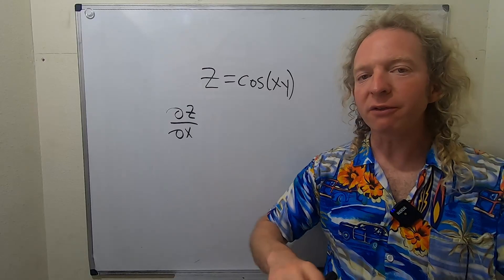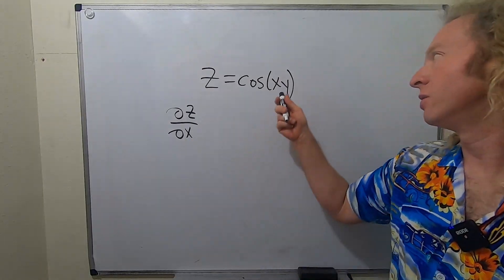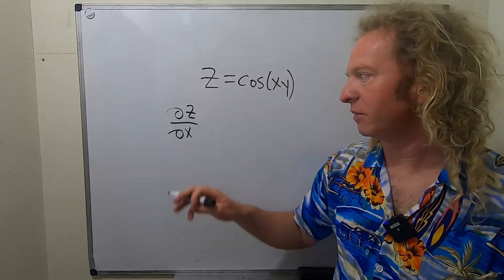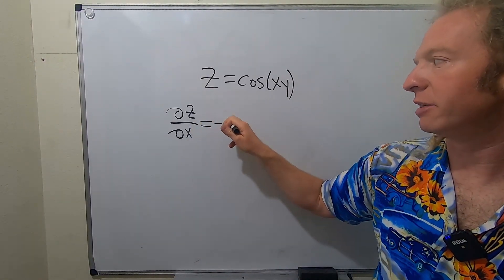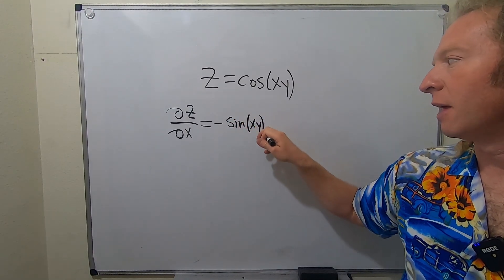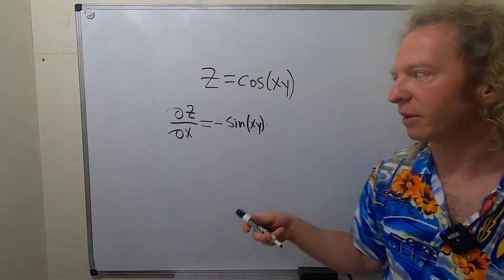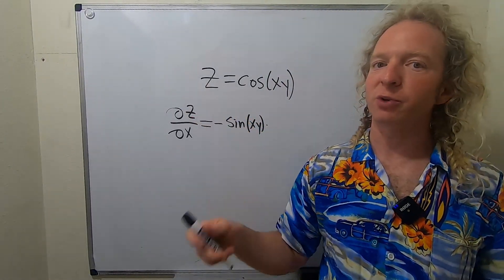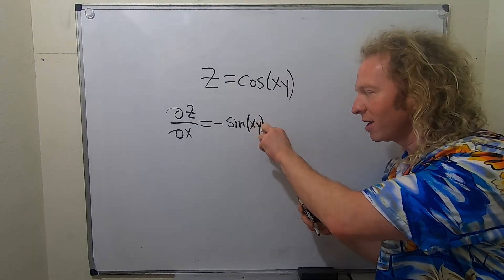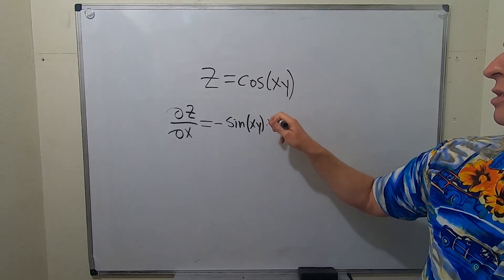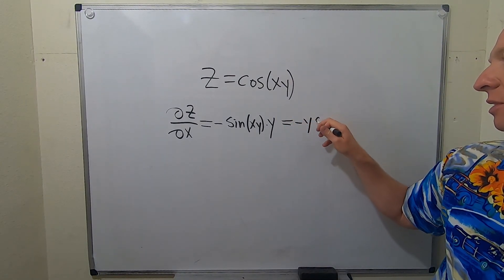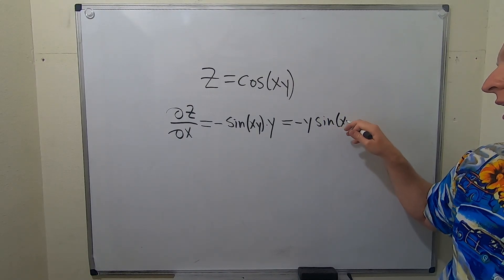When we do this, we treat all of the other variables as constants. So y here is a constant. So the derivative of cosine is negative sine. So this will be negative sine of xy and then chain rule times the derivative of the inside. So we're taking the derivative with respect to x. So the derivative of x is one and the y is a constant, so it hangs out. So we simply get y. The last thing to do is put the y in the front like this and we're good.